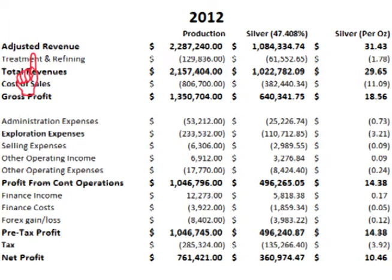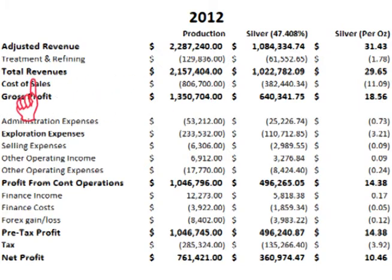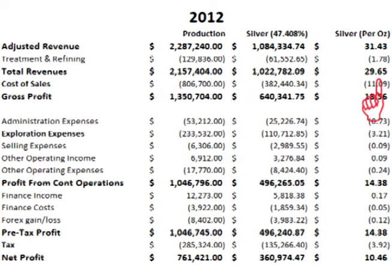In 2012 Fresnillo had a total adjusted revenue before cost of treatment and refining of about 2.287 billion, with about 1.84 billion coming from silver at $53.43 per ounce. Treatment and refining costs were about 130 million, with a little over 61 million coming from silver or $1.78 per ounce. In 2012, total revenue after treatment and refining costs was about 2.157 billion, with about 1.023 billion coming from silver or $29.65 per ounce.